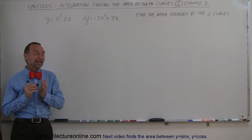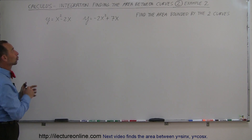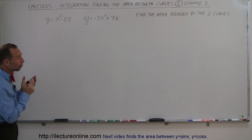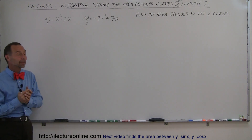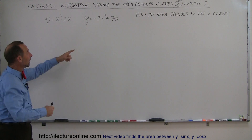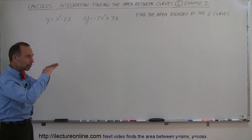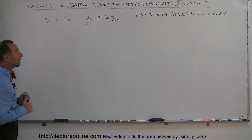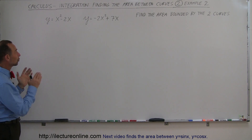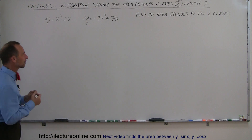Welcome to Electronline. Now we're going to do an example where we find the area between two curves. Notice they're both quadratic equations — they both look like parabolas. This is a parabola that opens upward, and this is a parabola that opens downward, so they probably will enclose some area we're trying to find. Before we can figure out what to do, we should graph those two equations to give us a better idea of what it looks like.